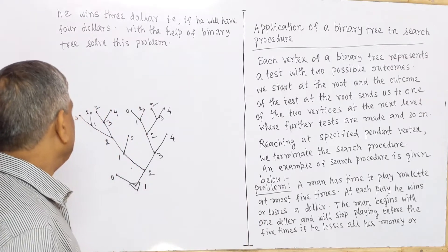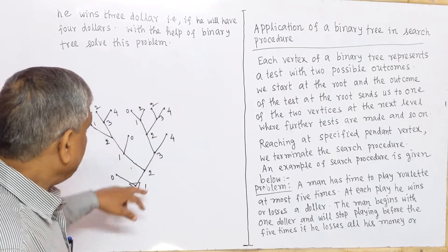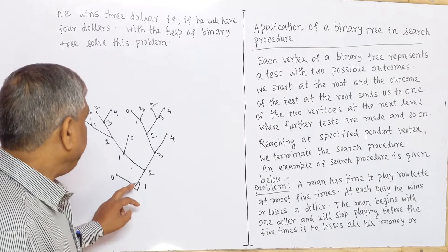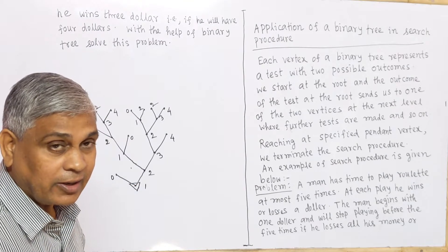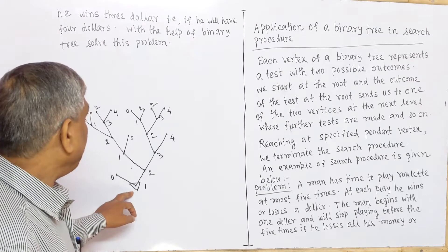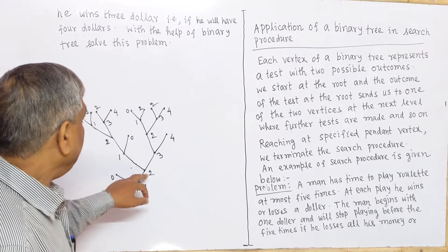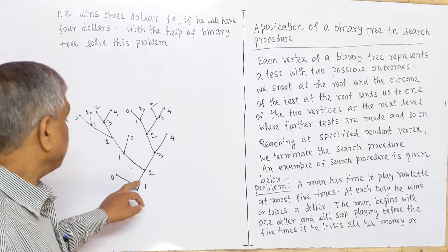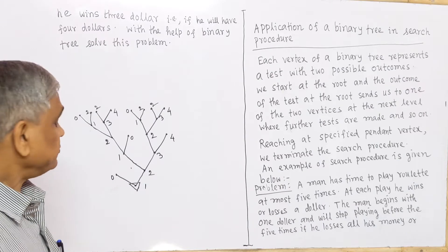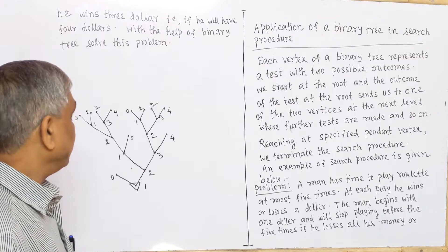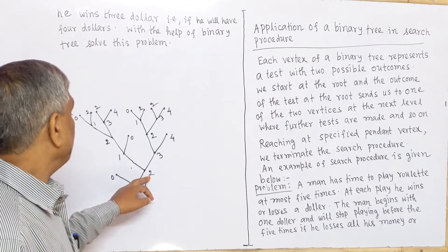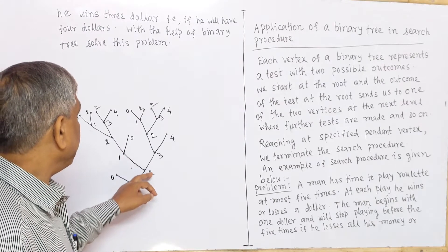This is an example of a binary tree. Here, this is the root of degree 2. The man has 1 dollar and starts to play roulette. If he wins a dollar, he will have 2 dollars. Or if he loses that 1 dollar, he will have 0 dollars — here the play is stopped. If he has 2 dollars and wins a dollar, he will have 3 dollars. If he loses 1 dollar, then he will have 1 dollar.